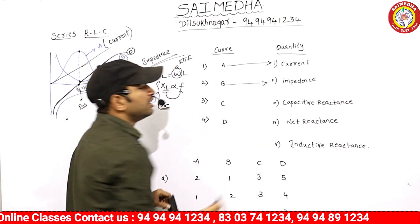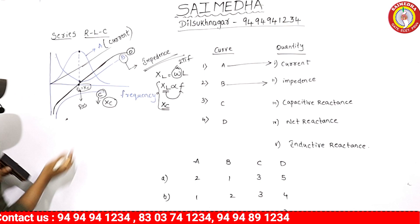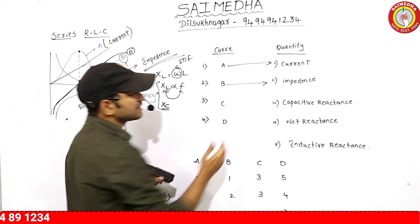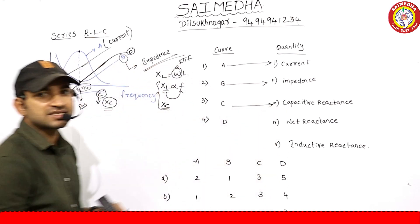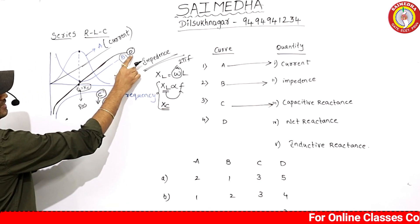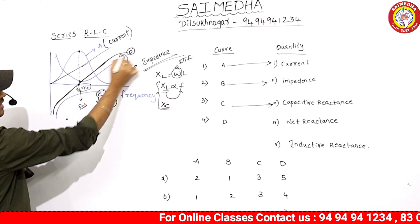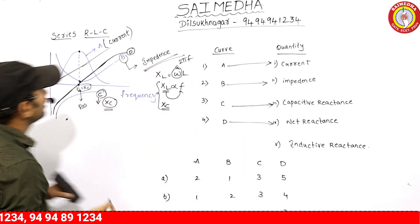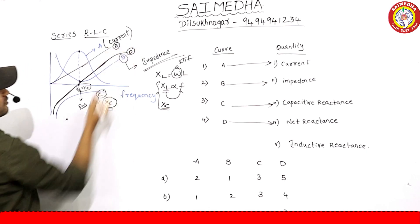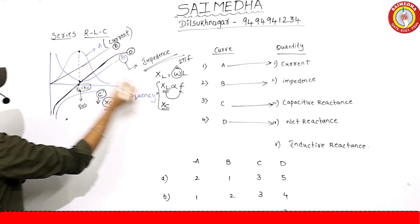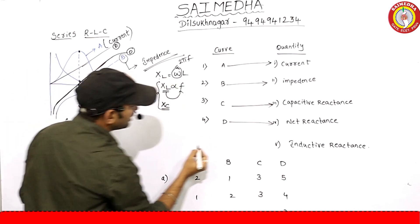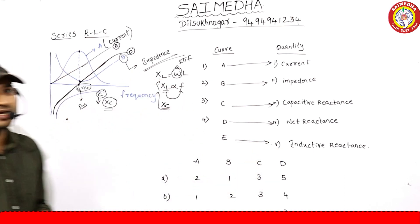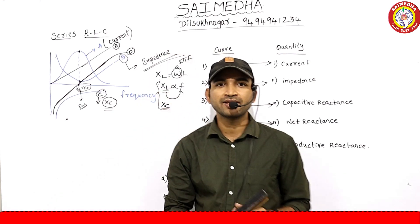The inductive reactance is indicated here. The rectangular hyperbola is related to capacitive reactance. Curve C indicates capacitive reactance. Curve D (net reactance resultant) indicates net reactance. Curve E indicates inductive reactance, which is directly proportional to frequency — a straight line. Thank you all.